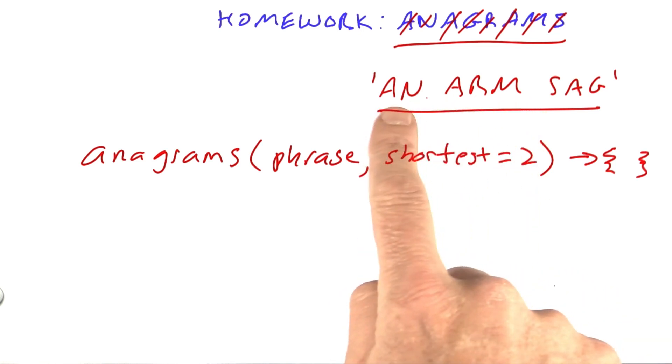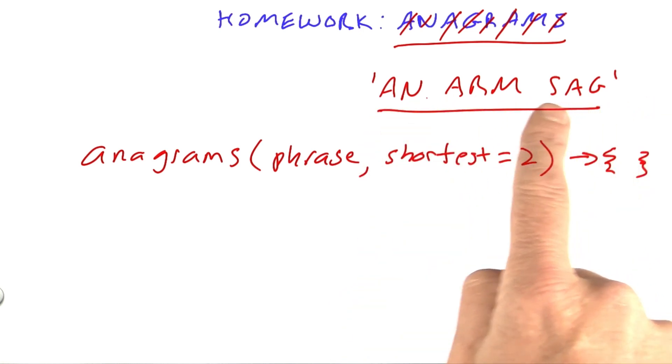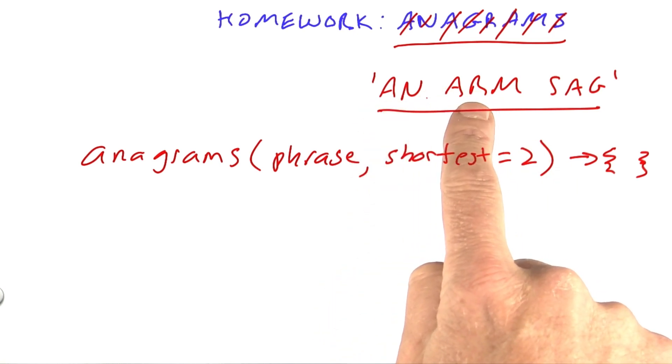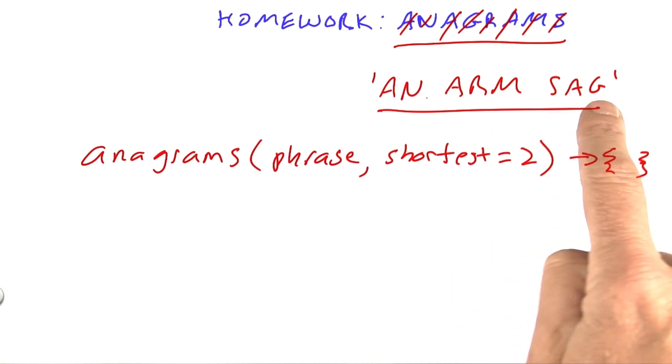We're only going to show out of each of those six possibilities or n factorial possibilities for an n-word phrase, only show the one that's in alphabetical order. Here, the word 'an' is alphabetically before the word 'arm', which is alphabetically before the word 'sag'. That's the representative we've shown out of the six possibilities.